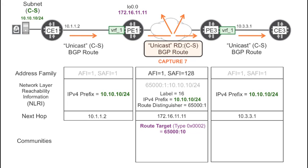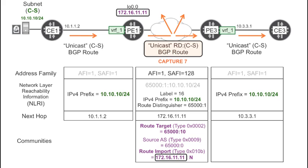What did change? There are two new extended communities. The source AS community is necessary but not very interesting in an Intra-AS scenario. The most important community here is the route import, which has two parts: first, the router ID of the advertising PE — in this case PE-1 — and second, a very important little number. This number is dynamically generated at PE-1, has local significance to PE-1, and its meaning is simply VRF-1.